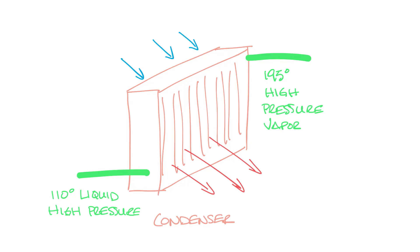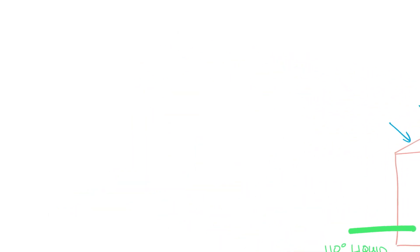The liquid refrigerant that leaves the condenser is still under high pressure, so its pressure must be reduced before it enters the evaporator again. To reduce the pressure, the refrigerant passes through an expansion device. So let's move this over and look at the expansion device.